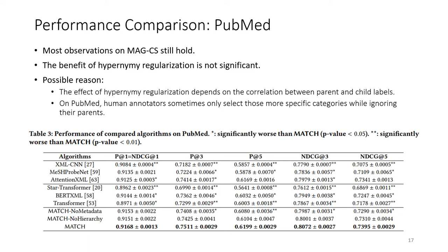The possible reason could be that the effect of hypernymy regularization depends on the correlation between parent and child labels. However, on PubMed, human annotators sometimes only select those more specific categories while ignoring their parents.